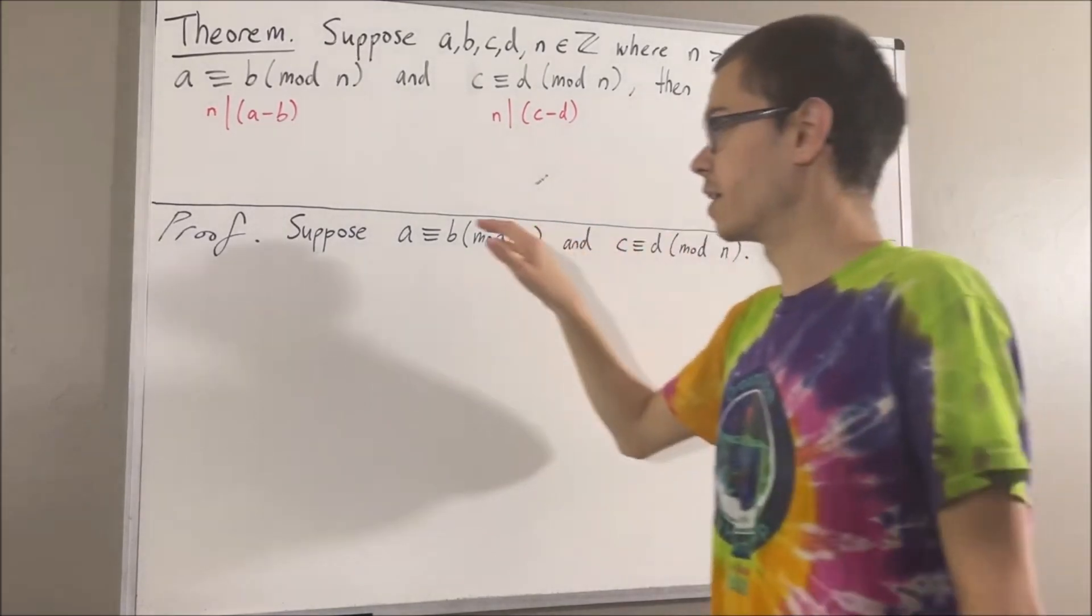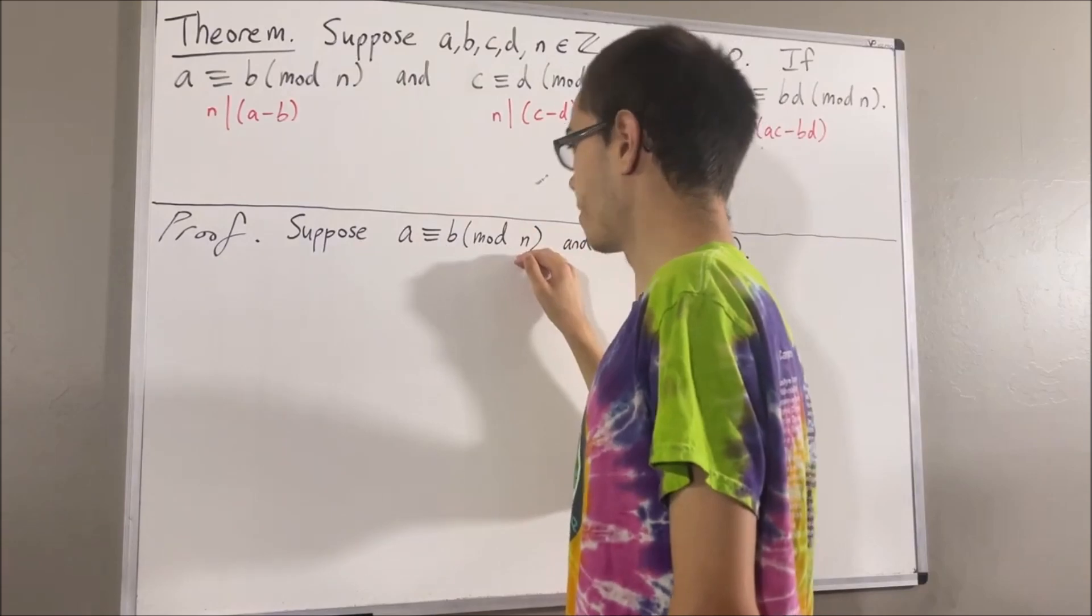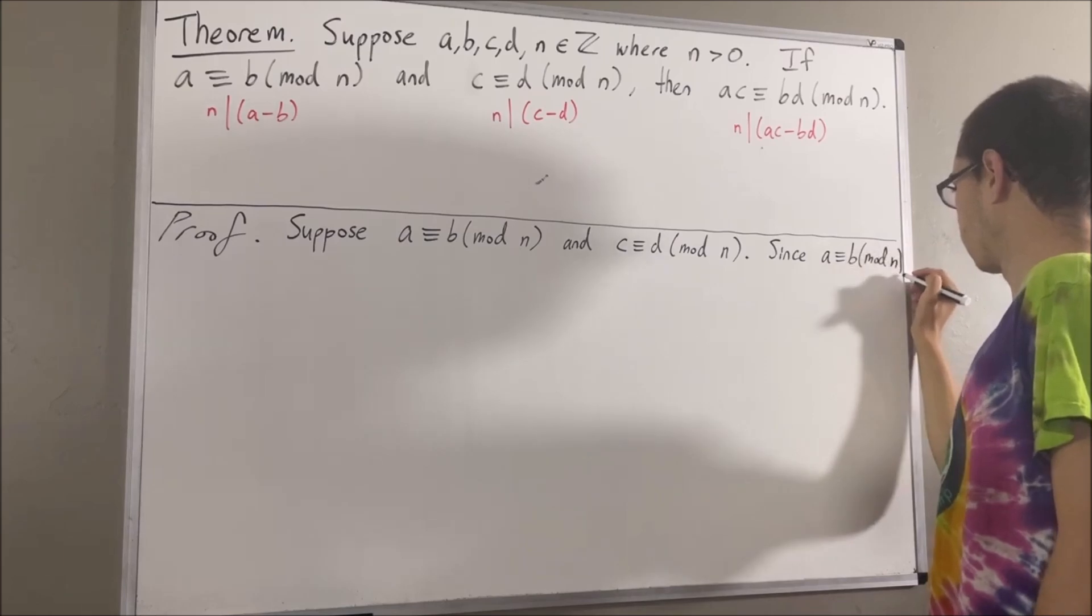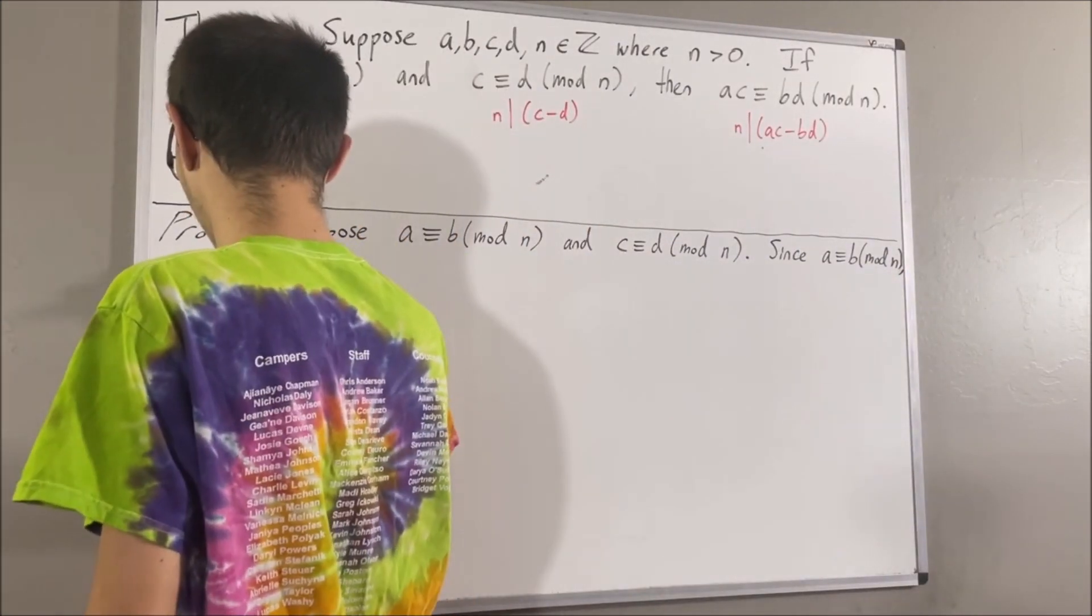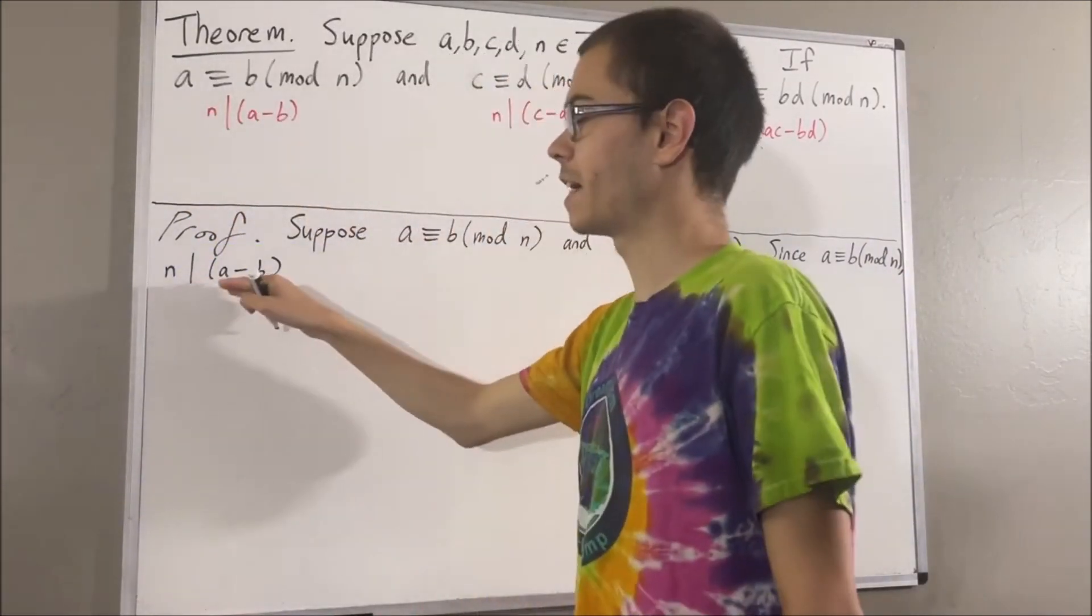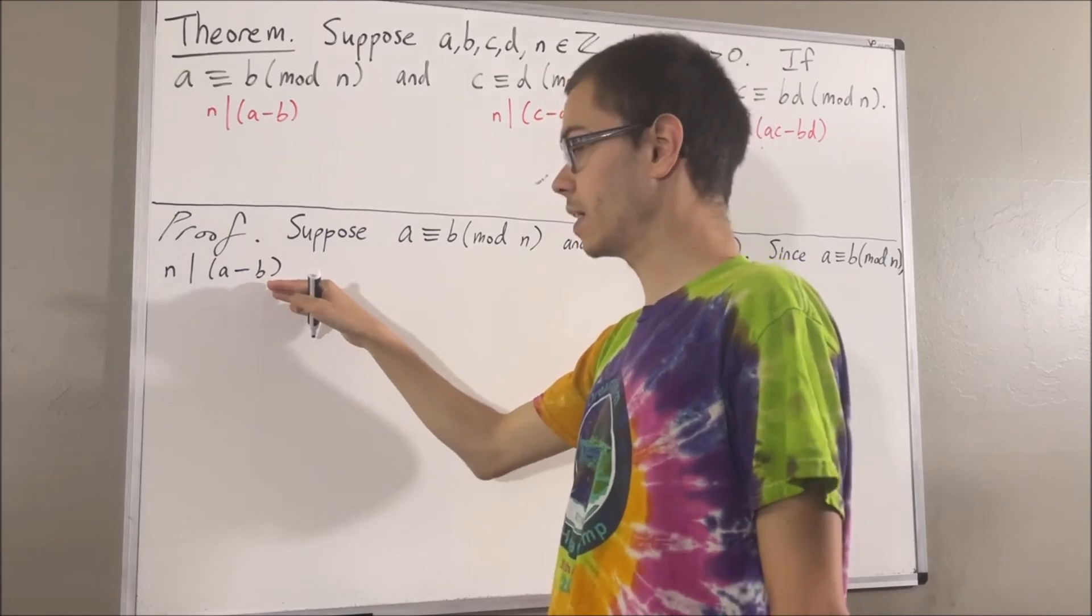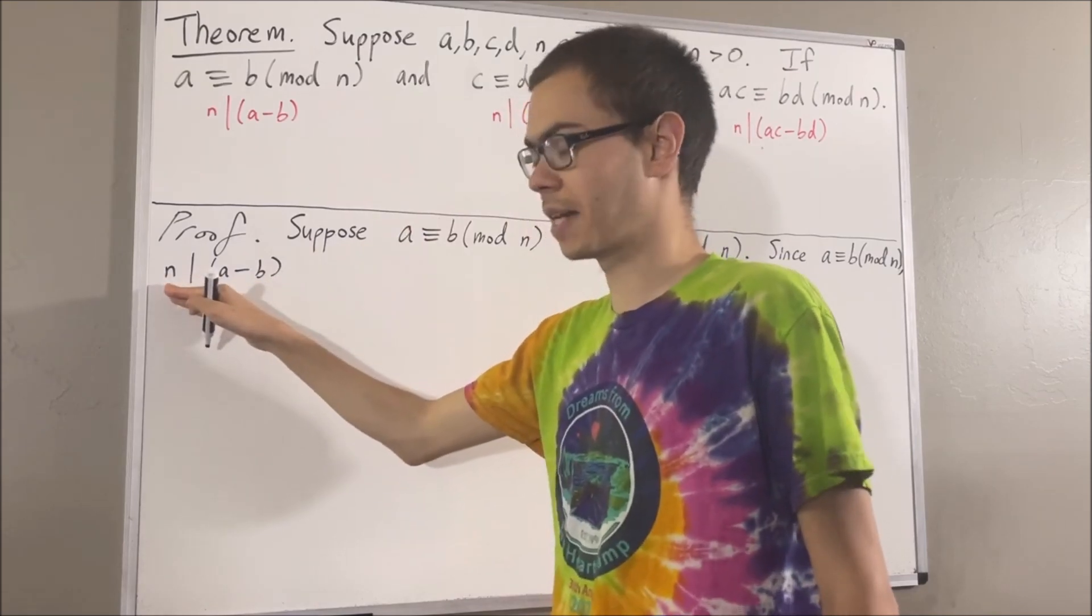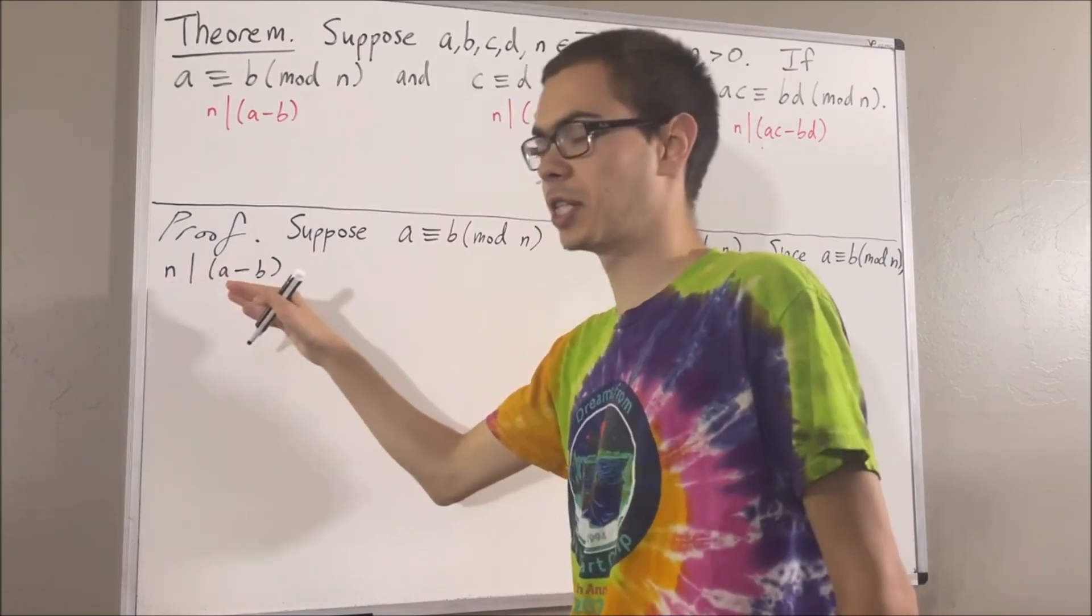Now, to start, since a is congruent to b modulo n, this means n divides a minus b. What does it mean for n to divide a minus b? It means that there exists an integer such that a minus b is equal to n times that integer. I'll call the integer p.